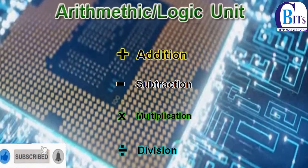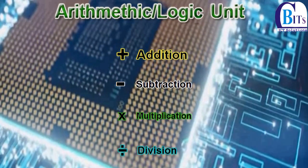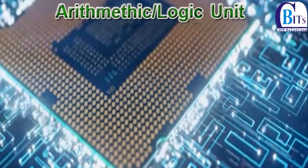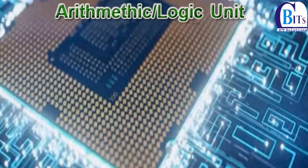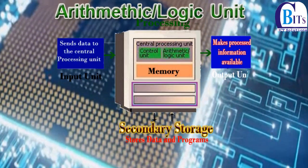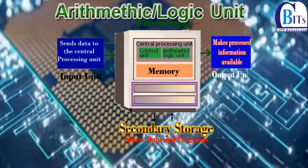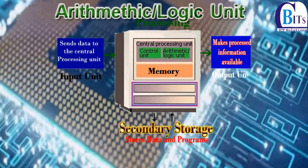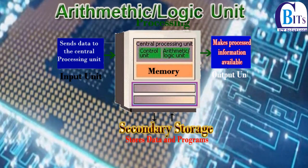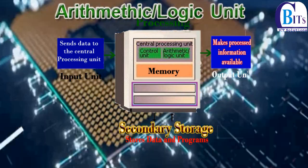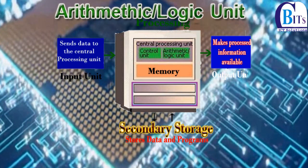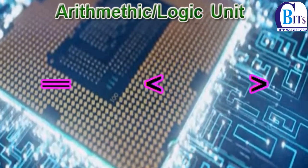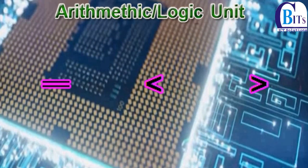As its name implies, the Arithmetic Logic Unit also performs logical operations. A logical operation is usually a comparison. This unit can compare numbers, letters, or special characters. The computer can then take action based on the result of the comparison — for example, it enables a computer to tell whether there are unfilled seats on airplanes, or whether one candidate has more votes than another. A logical operation can test for three conditions: equal to, less than, and greater than.